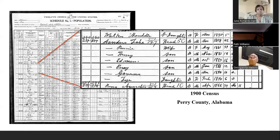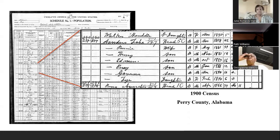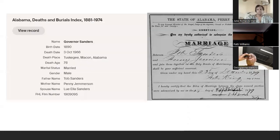In the 1900 census, we have Penny with her husband Toby, with their children Henry, Edmond, Percy, Governor, and Ty. I still needed to know what Penny's maiden name was. I didn't discover it until I came across the death record of her son, Governor Sanders. With records becoming more digitized in recent years, I was able to find that death record.